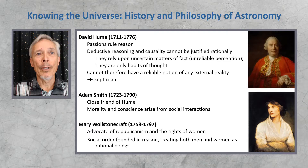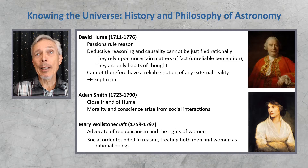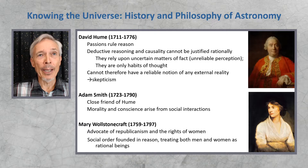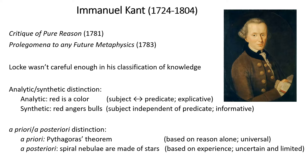Adam Smith is another important thinker, mainly in economics, and a close friend of Hume. Mary Wollstonecraft is also an important figure — an advocate of republicanism and the rights of women, who recognized that a social order founded in reason would treat both men and women as equally capable rational beings. Immanuel Kant's book The Critique of Pure Reason is hugely influential in the history of philosophy. He argued that Locke was not careful enough in his classification of knowledge, making distinctions between analytic — such as 'red is a color' — versus synthetic, such as 'red angers bulls,' where the predicate adds new information from experience.